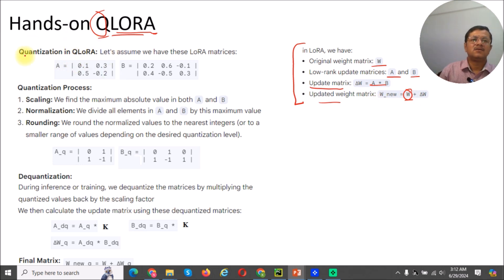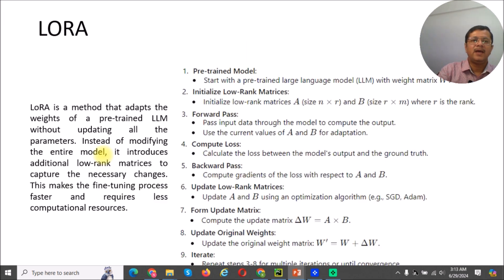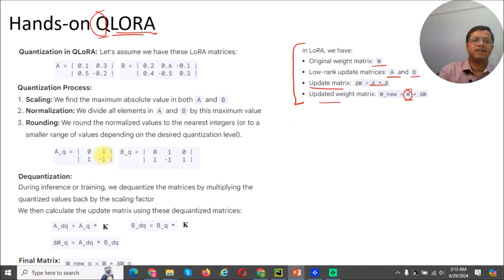So now what is the difference here? In the quantized low-rank adaptations, we have this kind of matrix and we took two smaller matrices A and B. Now the main difference is that quantized low-rank adaptations make use of quantization process and dequantization process. This process actually reduces the computation overhead.